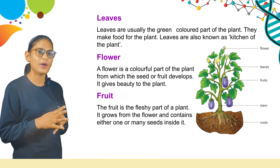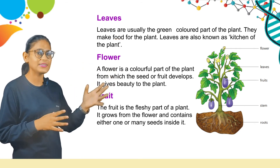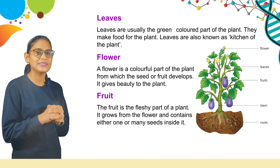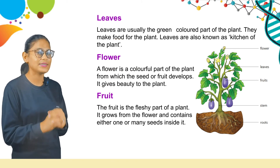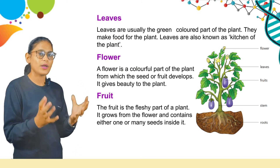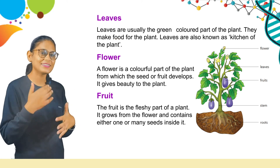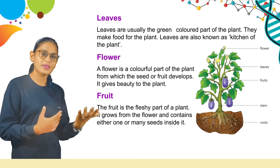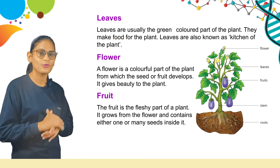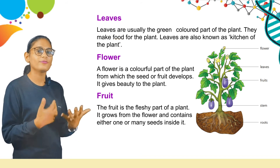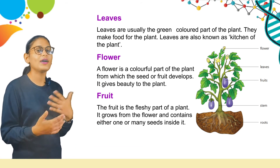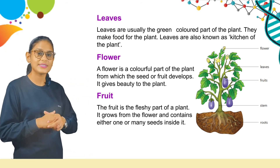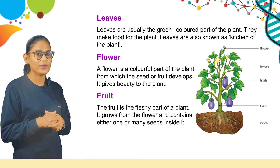Now, fruit. The fruit is a fleshy part of a plant. It grows from the flower and contains either one or many seeds inside it. Students, a fruit is the part of the plant that we all eat. Fruits can have one seed or more than one seed — that is why our fruits have seeds, because they develop from the flower, and from the flower two things develop: seeds and fruits.